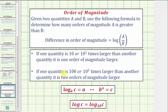If one quantity is a hundred times, or ten to the second times, larger than another quantity, it is two orders of magnitude larger. Notice how the order of magnitude is equal to the exponent on ten. And remember, exponents are logarithms.